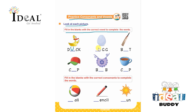Next is egg — they have to write E, G, G — egg. Then it is B, A, T — bat. After that C, A, P — cap. After that it is bib — B, I, B. After that it is cup — C, U, P — cup.